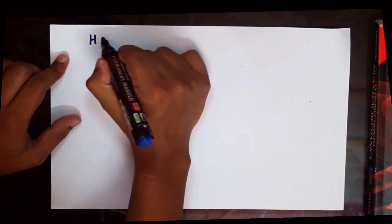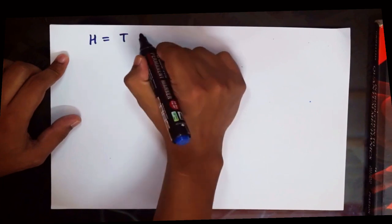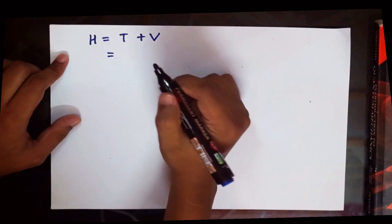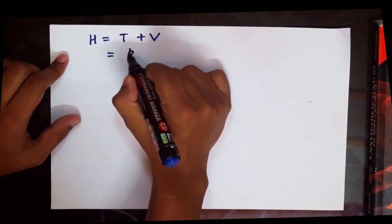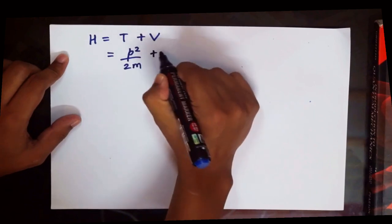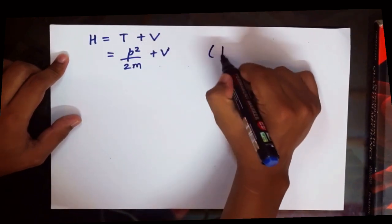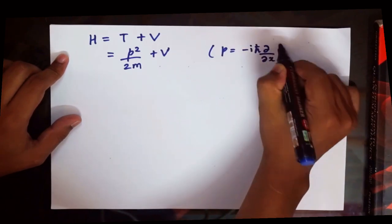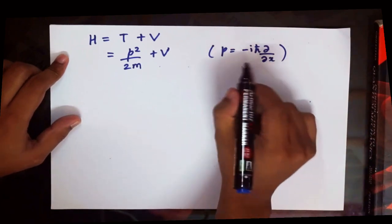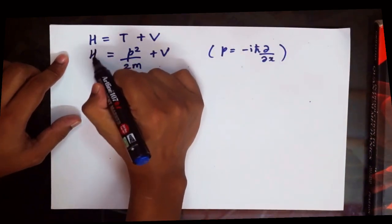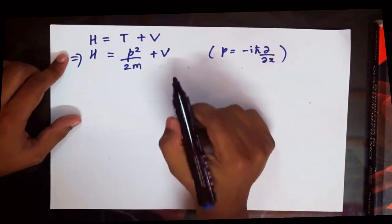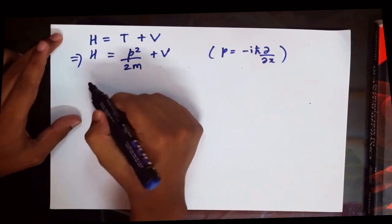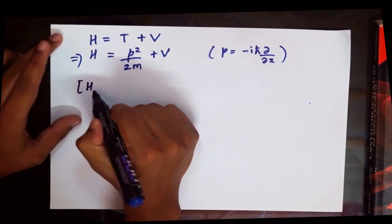We write H as the sum of kinetic energy plus potential energy. For a quantum mechanical system, the kinetic energy is p squared over 2m, plus V. Remember that p is the operator minus ih-bar del by del x. We won't be using the explicit operator form throughout; we'll use p symbolically to calculate the commutator [H, xp].